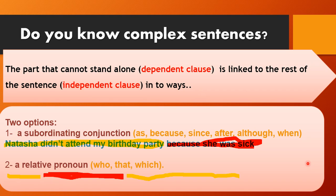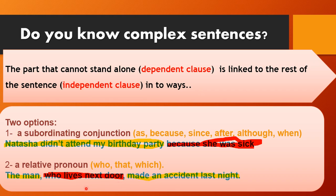The second way is a relative pronoun — who, that, which — and we still have more. For example: 'The man who lives next door made an accident last night.' The highlighted independent clause is 'the man made an accident last night,' and the dependent clause is 'who lives next door,' embedded within it.